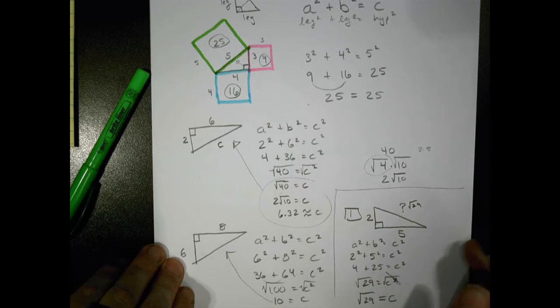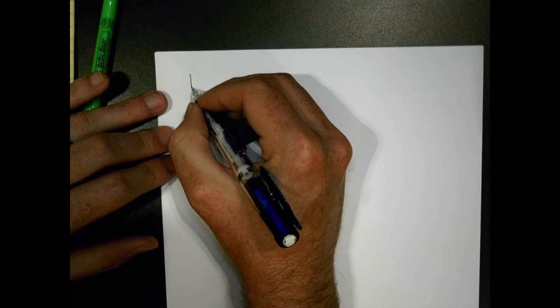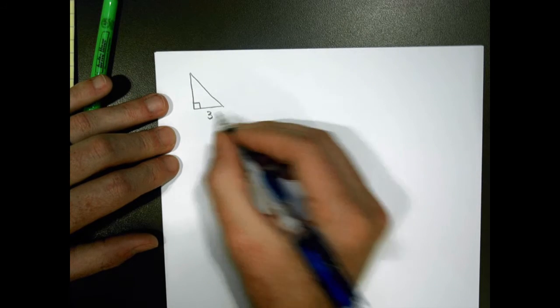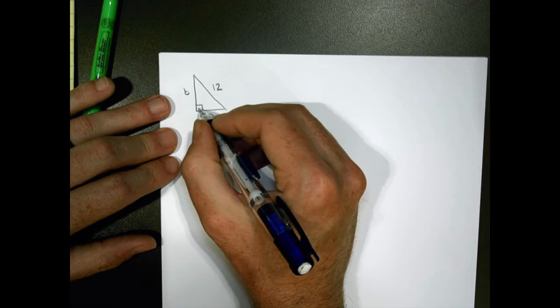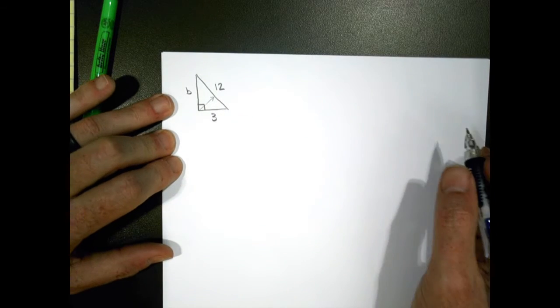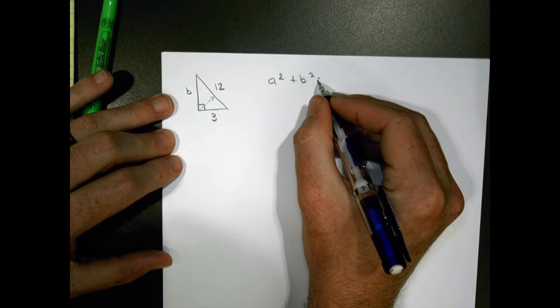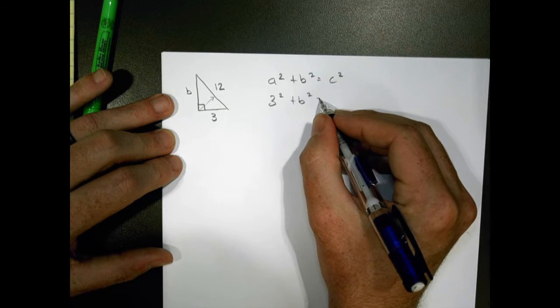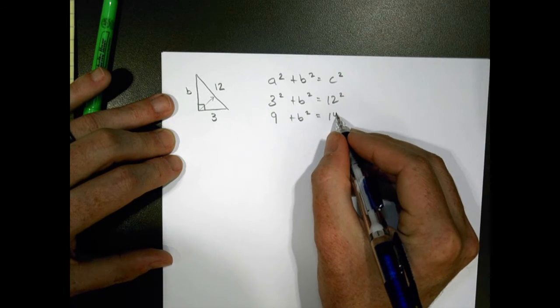In our first examples, we were given both legs and looked for the unknown hypotenuse. Sometimes, though, we're given one leg and the hypotenuse but not the other leg. Say they give us a leg of three and tell us the hypotenuse is 12. Can we find the missing leg? Yes — a squared plus b squared equals c squared. Three squared plus b squared equals 12 squared, so nine plus b squared equals 144.